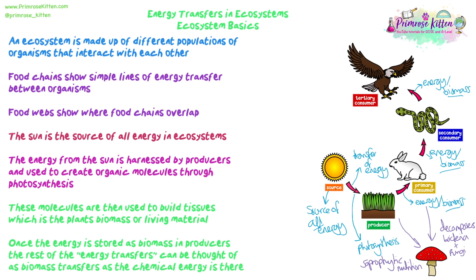Just a quick language recap before we move on. The labels producer, primary consumer, and secondary consumer are all trophic levels — the word 'troph' literally comes from the word meaning 'to eat.' If you're a primary consumer, you're often a herbivore eating plants only; a secondary consumer tends to eat animals. Primary, secondary, tertiary just mean first, second, and third. We'll be talking about these in the next few videos.